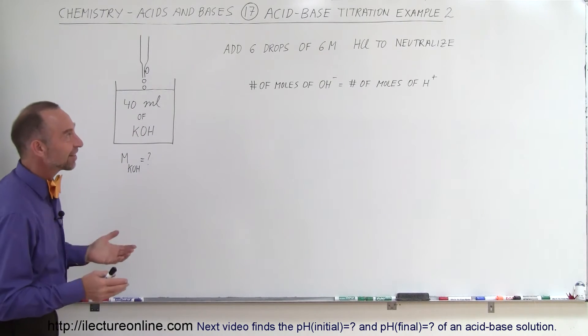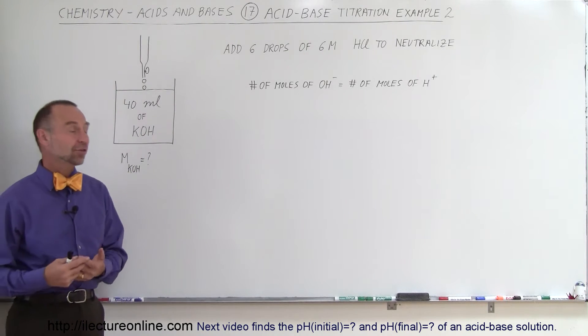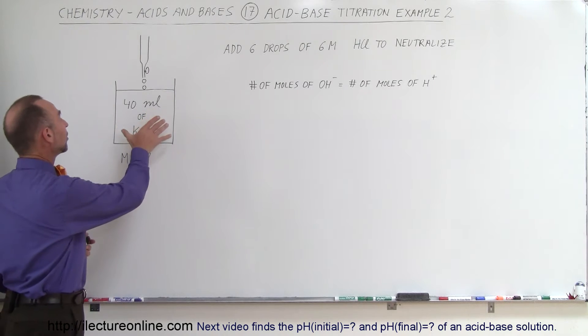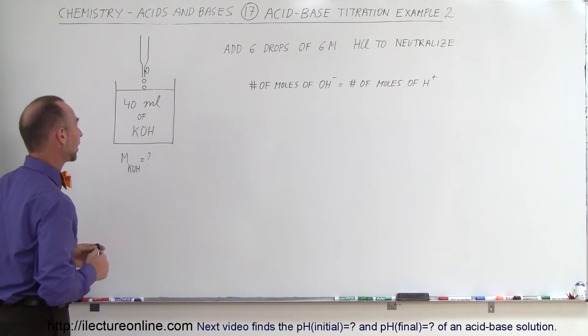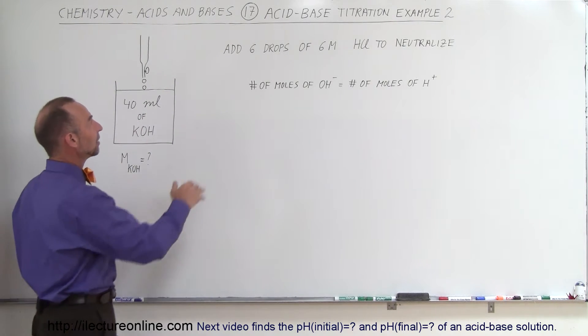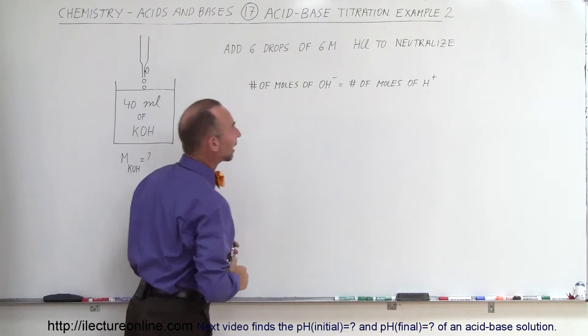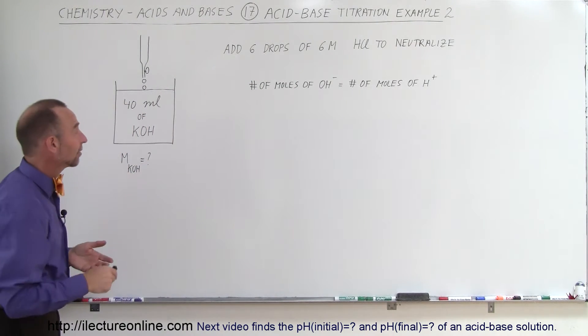Welcome to Electron Online and here's our second example of how we do an acid-base titration. In this case, we have 40 milliliters of a base, potassium hydroxide, and by adding six drops of six molar hydrochloric acid, we were able to neutralize that.